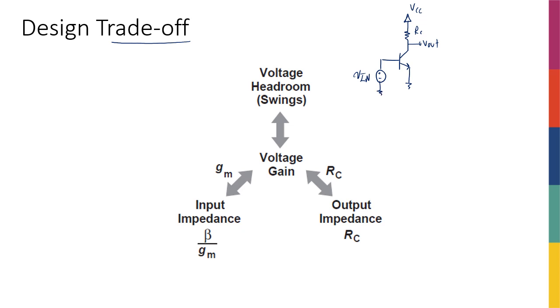And we said that for this amplifier, we have a gain that is equal to negative GM times R0 in parallel with RC. If there was no early effect, this R0 would have been infinity, so this would have been just negative GM times RC. We have a Rin, or Zin, the input resistance or input impedance, that is equal to Rpi, which is equal to beta divided by GM by definition.